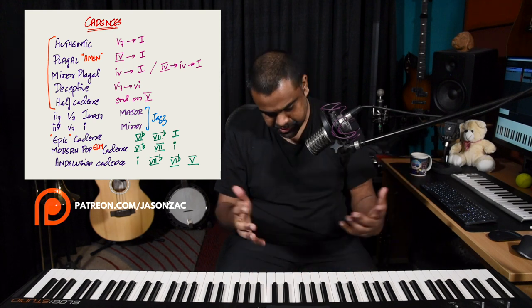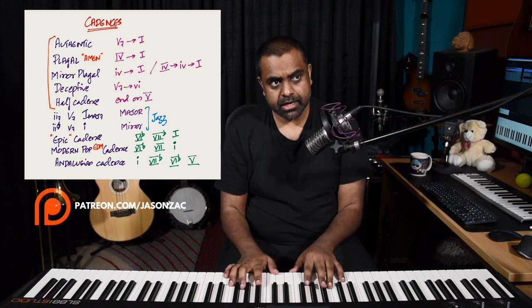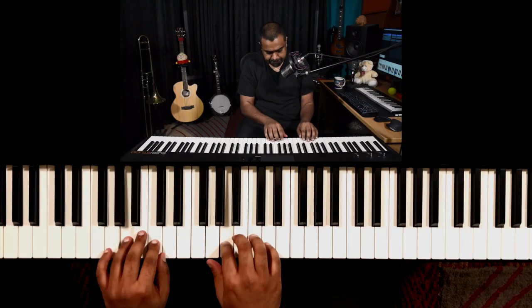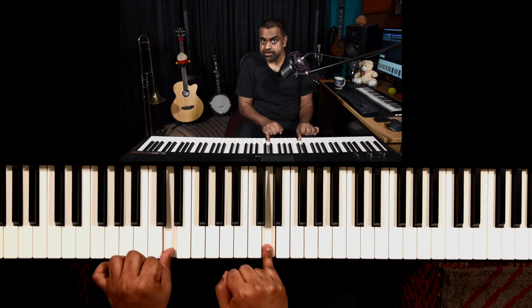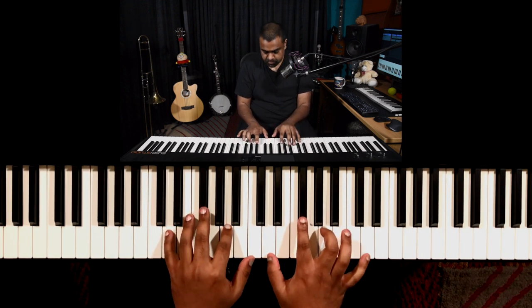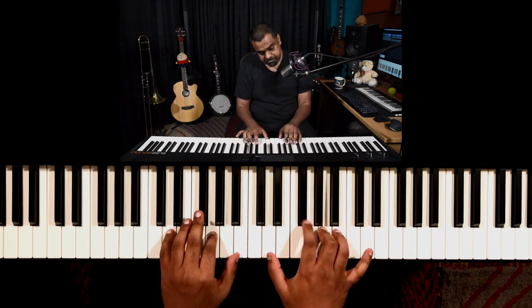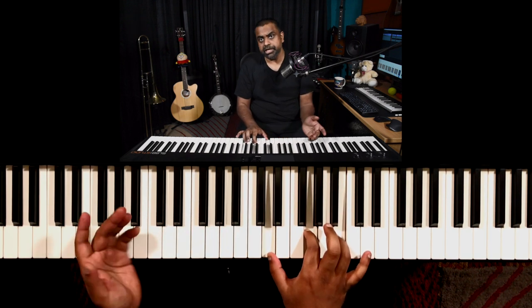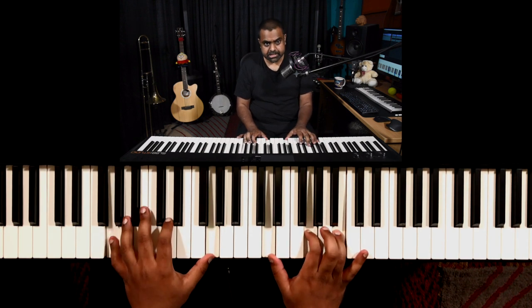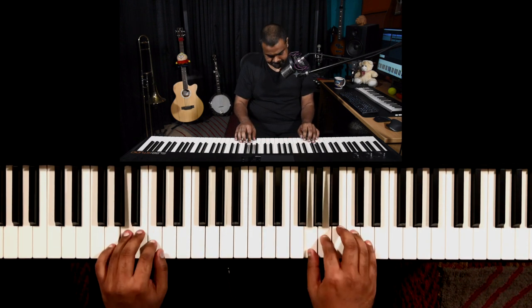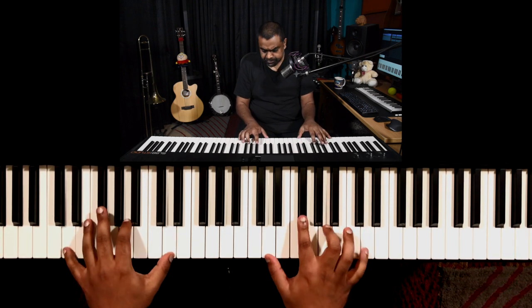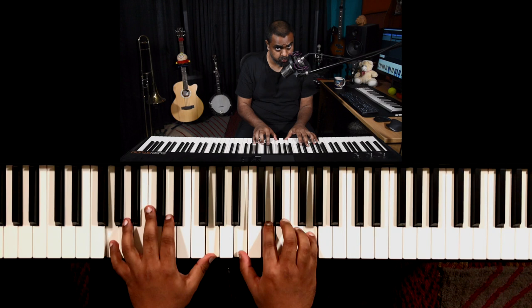The first cadence you find very commonly is what they call the authentic cadence. An authentic cadence is nothing but a 5 going to 1. So if you're in the key of G major, the 5 of G is D. You play the major chord of the 5 and then resolve it to the tonic chord, which is the 1. In the G major scale, the tonic is G — so 5 going to 1.